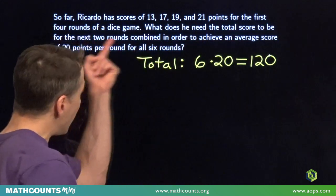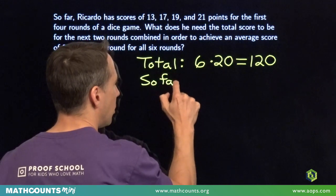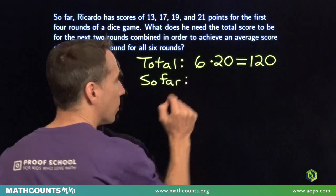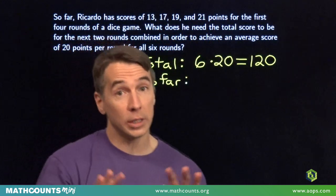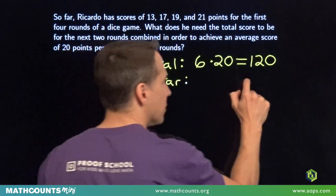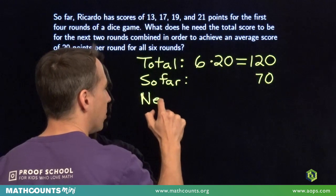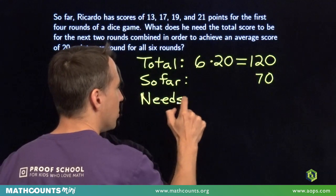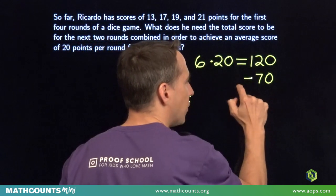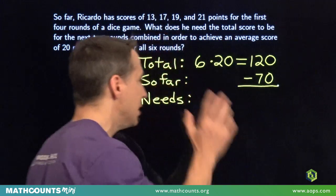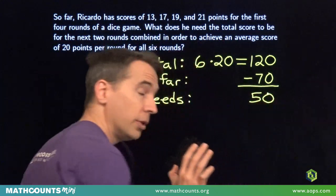Well, now let's think about what Ricardo has so far in these first four rounds. We just add up Ricardo's scores. 13 and 17, that gives us 30. 19 and 21 gives us another 40. 30 and 40 gives us a total of 70. So then we think about what Ricardo needs in those last two rounds. We just take away the 70 points from his first four rounds from the 120 total that he needs in all six rounds. He needs 50 points total in those last two rounds.